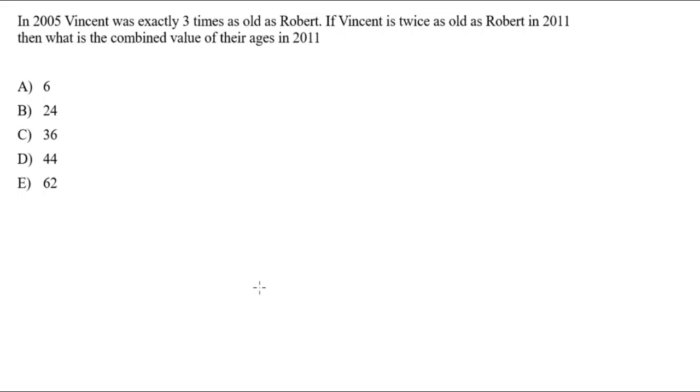In 2005, Vincent was exactly 3 times as old as Robert. If Vincent is twice as old as Robert in 2011, then what is the combined value of their ages in 2011? So, now that you know how to do these questions, I recommend pausing the video and attempting it yourself. And I'll assume you've done that now. So, I'll start working on it.